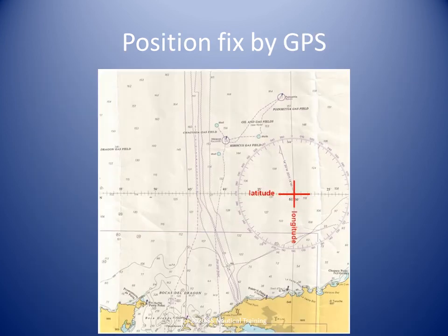The satellites are artificial celestial bodies and the receiver can do more calculations faster than we ever can. We get the convenience of simply looking at a screen and plotting two short lines to know where we are, in any condition of visibility or time of day.